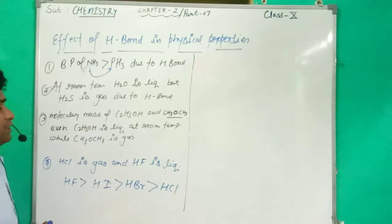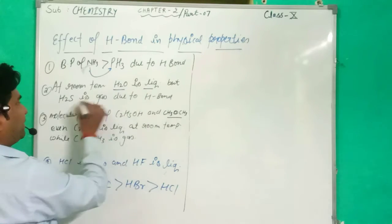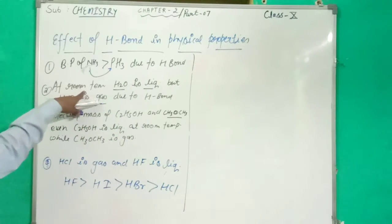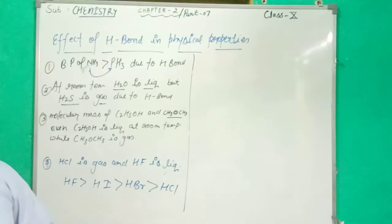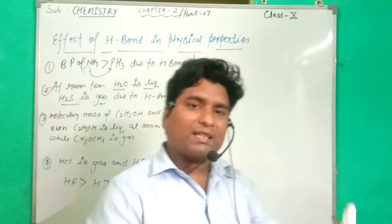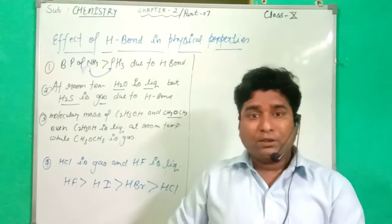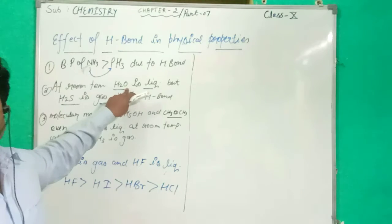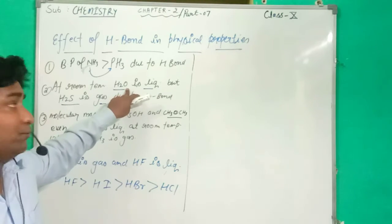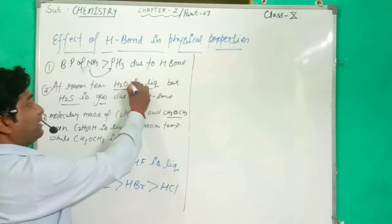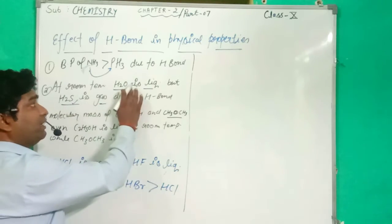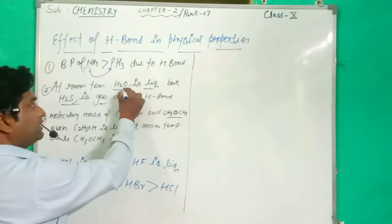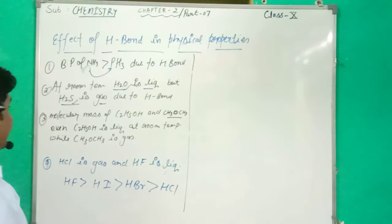This is very important for board examinations. At room temperature, water is liquid but H2S is gas. H2S and water both belong to the same group, so they might be expected to have the same properties. But H2O is liquid and H2S is gas due to Hydrogen Bonding — Oxygen has more electronegativity than sulfur, and so Oxygen and Hydrogen form the Hydrogen Bond, making water a liquid while H2S remains a gas.